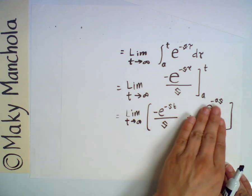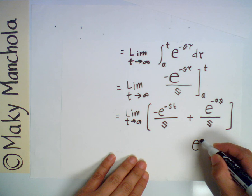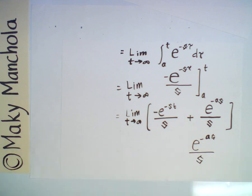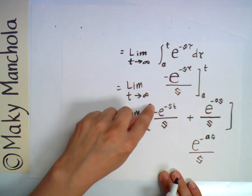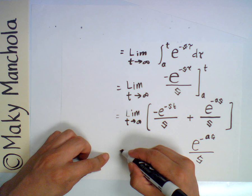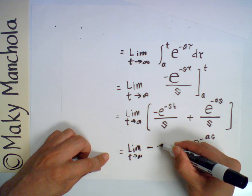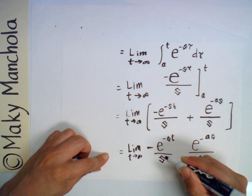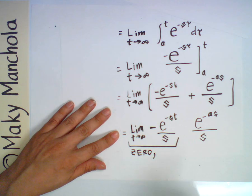As far as T is concerned, the second term e^(−AS)/S is a constant, so the limit as T approaches infinity of a constant is the constant itself — you just get e^(−AS)/S. As T approaches infinity, the first term, the limit of negative e^(−ST)/S, will approach zero, provided S is a positive number, so that limit equals zero provided S is greater than zero.